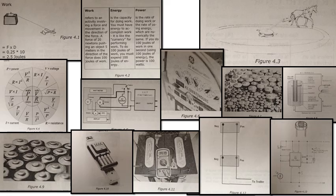Which are numerically the same. If you do 100 joules of work in one second using 100 joules of energy, the power is 100 watts. The concept of power is the amount of work done over a time period, which is expressed in seconds, minutes, or hours. The formula for power is force times distance divided by time.